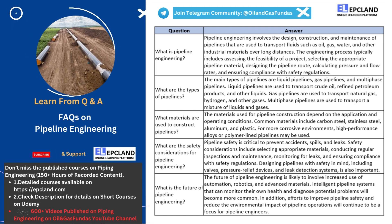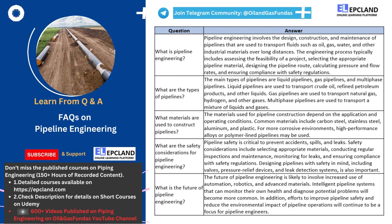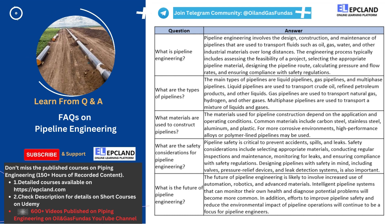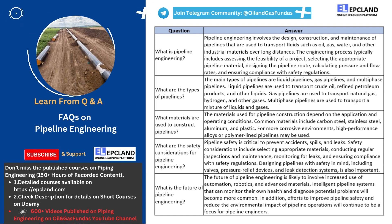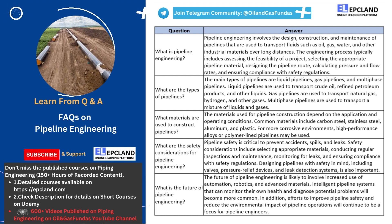Finally, multiphase pipelines are used to transport a mixture of liquids and gases. These pipelines are used in the oil and gas industry to transport a combination of oil, gas, and water from production sites to processing facilities. Multiphase pipelines can be challenging to design and operate due to the varying properties of the fluids being transported. In summary, each type of pipeline has its own unique design and operational challenges, but all play a critical role in transporting fluids over long distances.